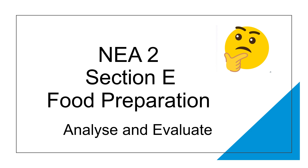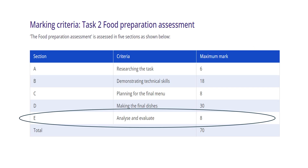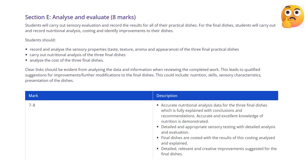In this video I discuss NEA2 section E, that's analyse and evaluate. Section E is worth 8 marks. Students will carry out sensory evaluation and record the results for all their practical dishes. For the final dishes, students will carry out and record nutritional analysis, costing, and identify improvements to their dishes.